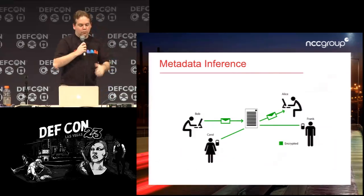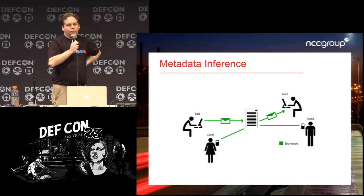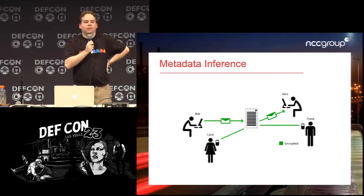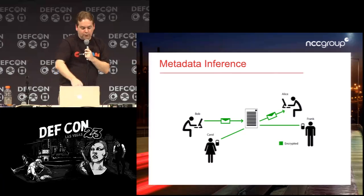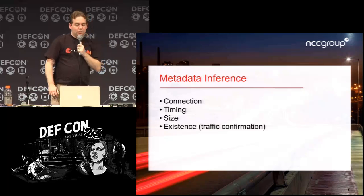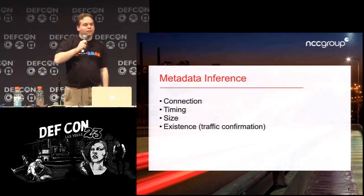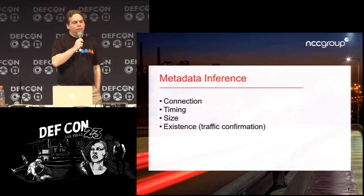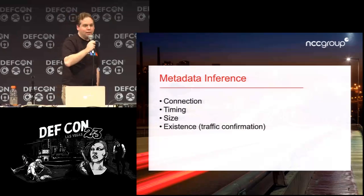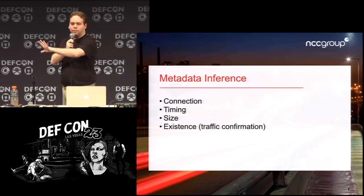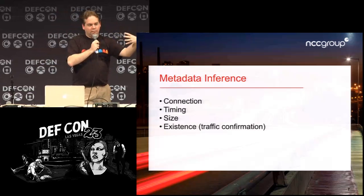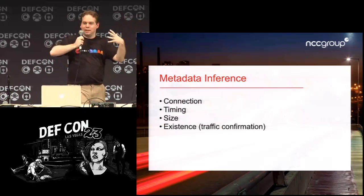Another way to do inference is with size. You might be able to tell that Alice and Bob were communicating because you saw Bob send a package of a particular size, then the server sent out a package of that same size to Alice. So you can infer who was communicating — not Frank or Carol, but Alice and Bob. To do that inference you can look at connections, timing, size, and existence of traffic. This is a traffic confirmation attack. If the government has a van outside your house and wants to confirm an alias is really you, they send a message of a certain size at a certain time and watch your wifi to see if that thing comes through at the same size.